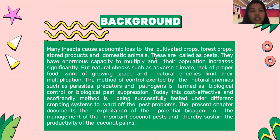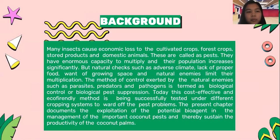The background of this presentation is that many insects cause economic loss to cultivated crops, forest crops, stored products, and domestic animals. These are called pests. They have enormous capacity to multiply and their population increases significantly. But natural checks such as adverse climate, lack of proper food, lack of growing space, and natural enemies limit their multiplication.